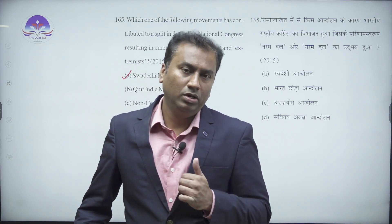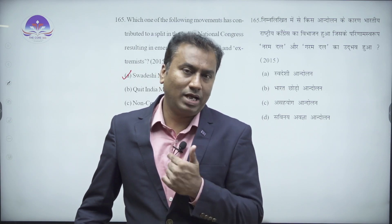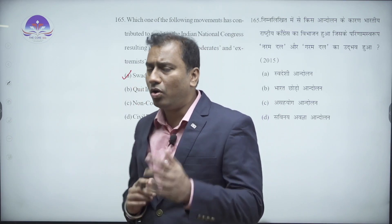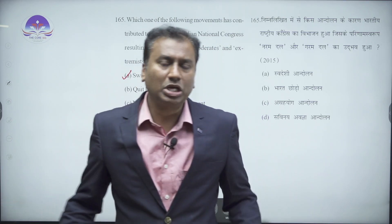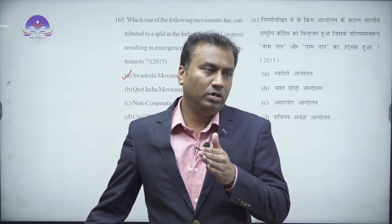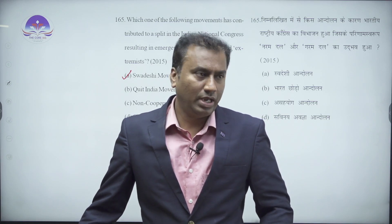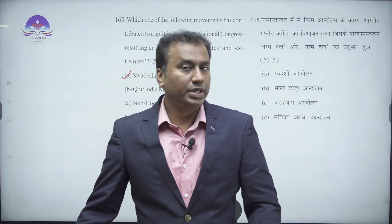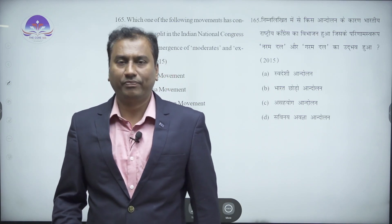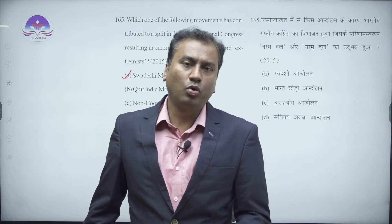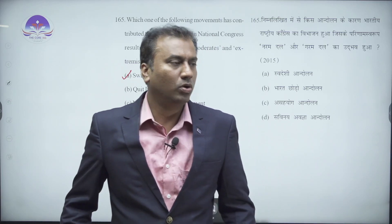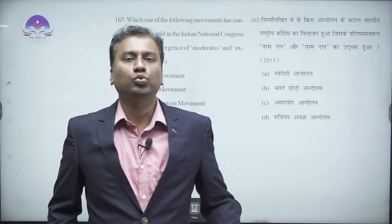The Swadeshi Movement came against the Bengal partition. The 2015 question has taken the Swadeshi Movement as the answer. The logic is: when Bengal was partitioned, West Bengal, Bihar, and Odisha came on one side, and Assam, Tripura, and East Bengal (today's Bangladesh) on the other. The British government's objective was not merely to partition Bengal - Bengal was just a pretext.